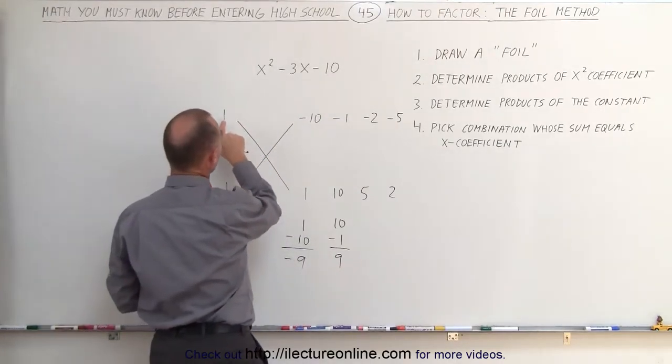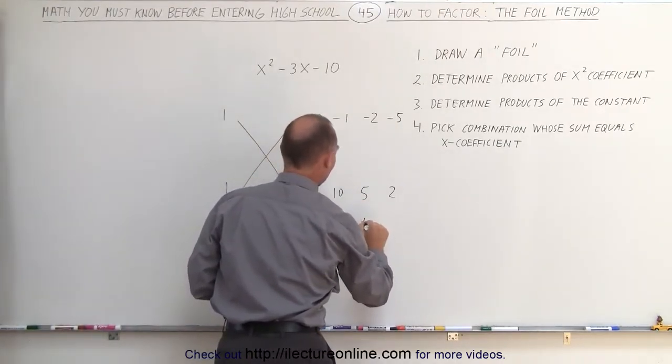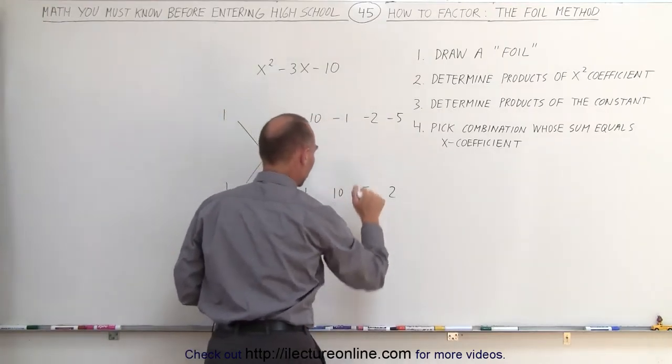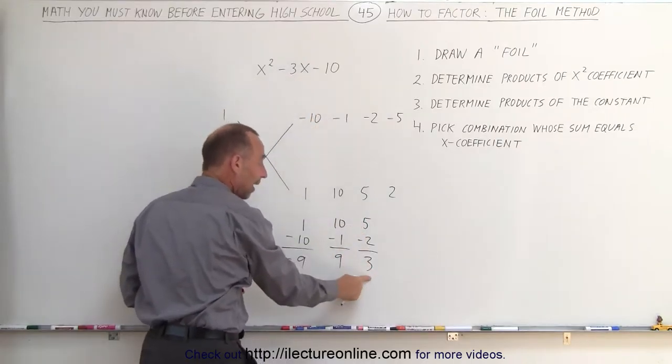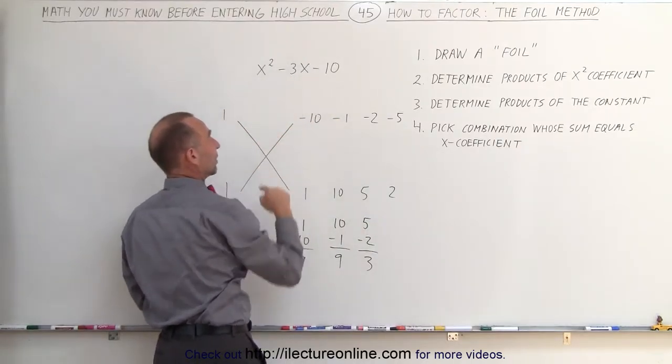Next, we multiply the 1 times 5 and 1 times a negative 2. When we add that together, we get 3. Close, but not quite because here I have a positive 3 and I need a negative 3.